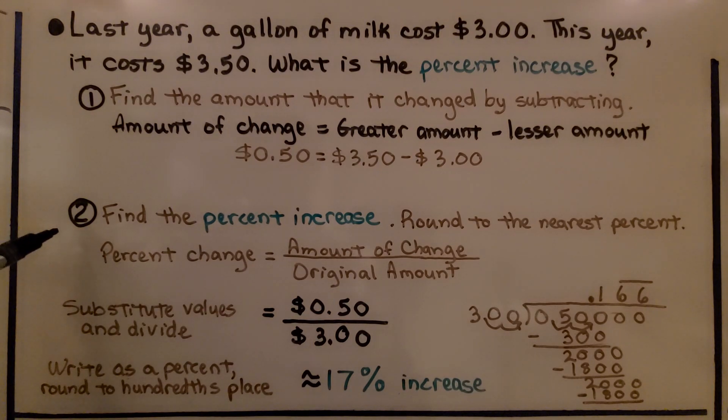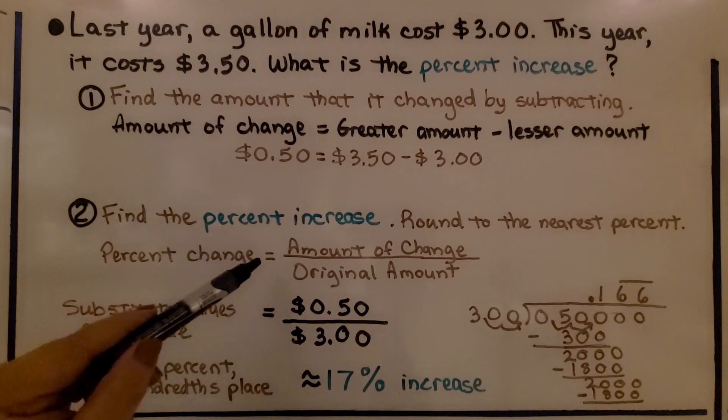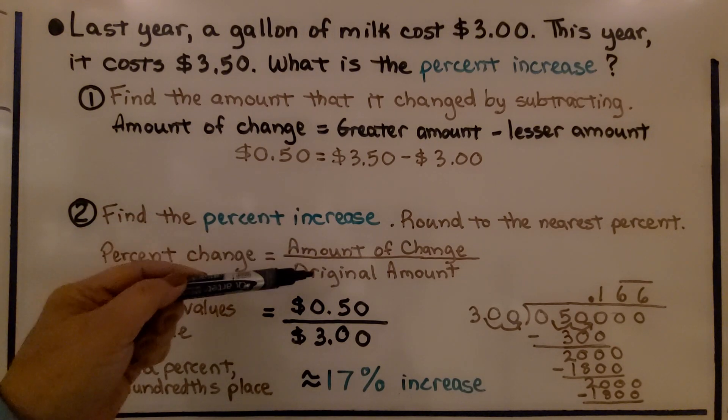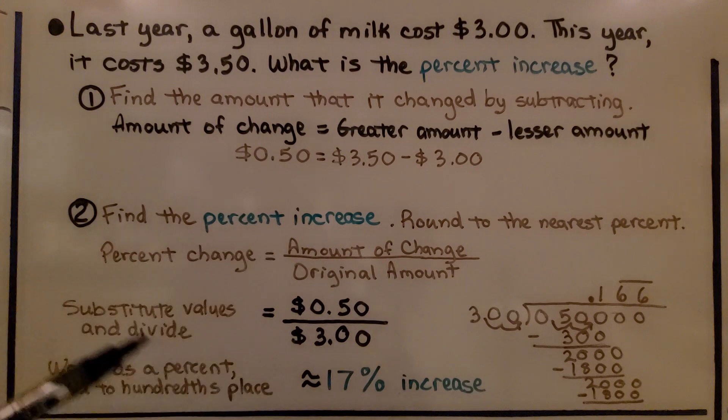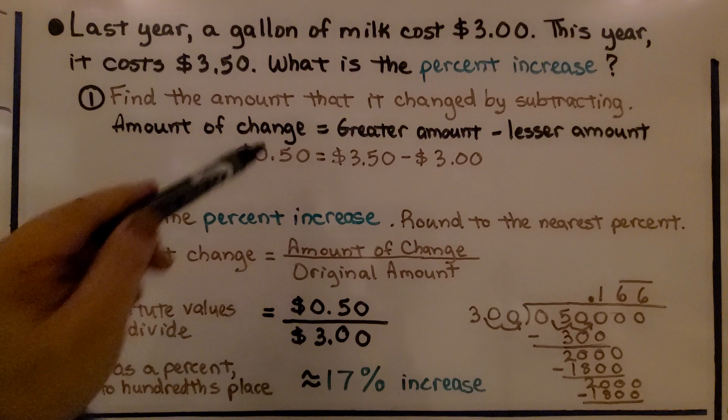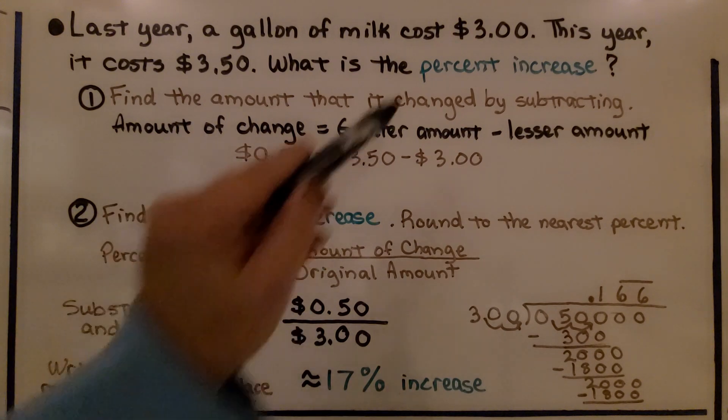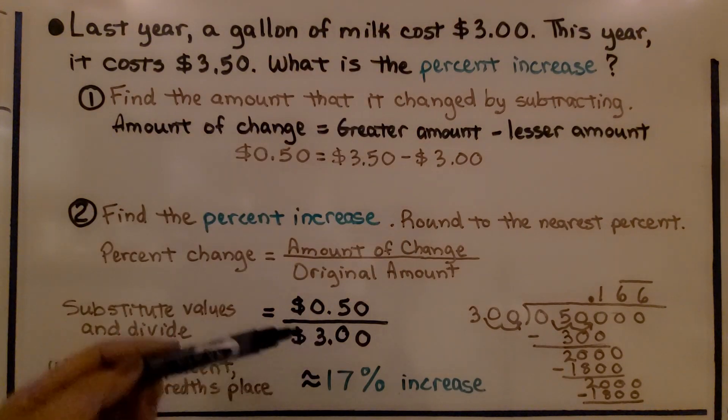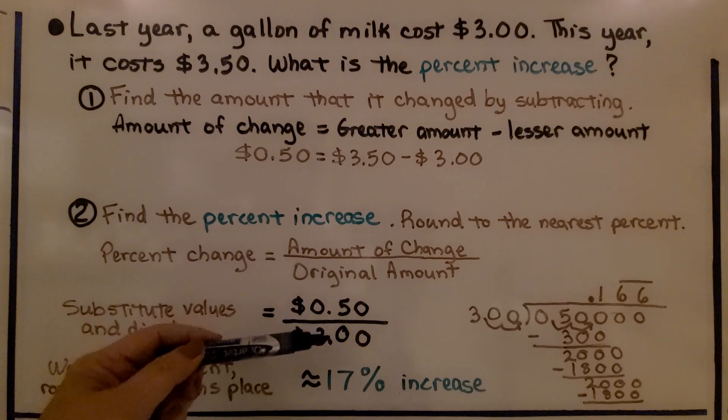We find the percent increase. We round to the nearest percent. The percent change is equal to the amount of change divided by the original amount. We substitute the values and divide. The amount of change was $0.50, and the original amount was $3. So we're going to do $0.50 divided by $3.